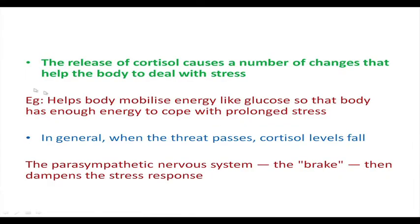Coming back to the HPA axis: the release of cortisol — one of the glucocorticoids — causes a number of changes that help the body deal with stress. Cortisol helps mobilize energy like glucose so that the body has more energy to cope with prolonged stress, and it also helps break down fat metabolism. In general, when the threat passes, the cortisol level falls. For example, when I see a train coming while standing on the railway track, the immediate threat triggers the HPA axis; but as soon as I step away, the threat passes and cortisol falls.